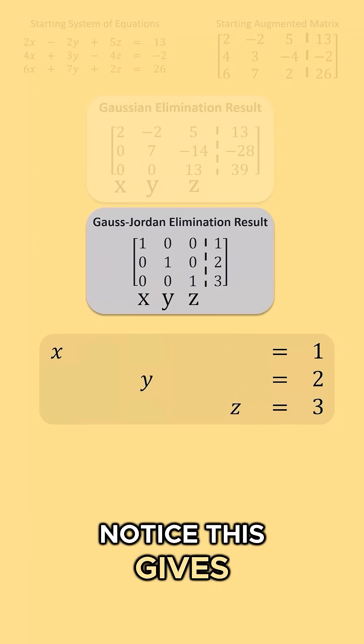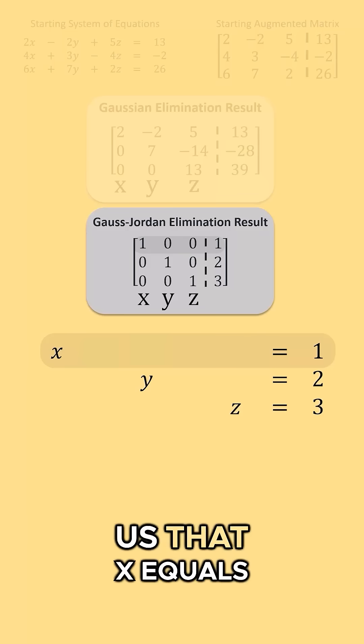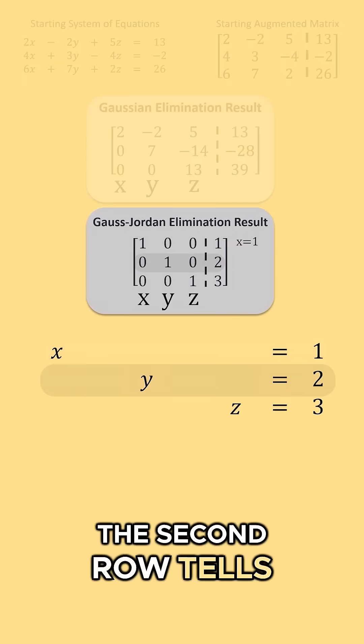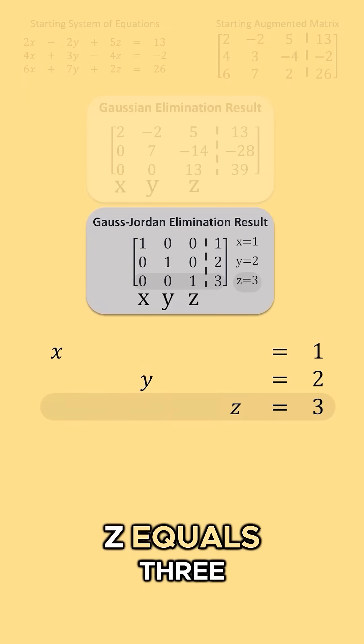Notice, this gives us the unique solution. The top row tells us that x equals 1, the second row tells us that y equals 2, and the third row tells us that z equals 3.